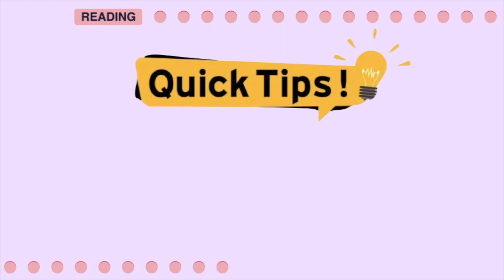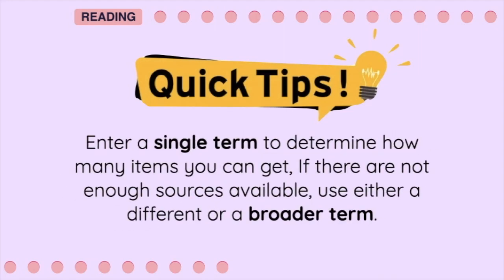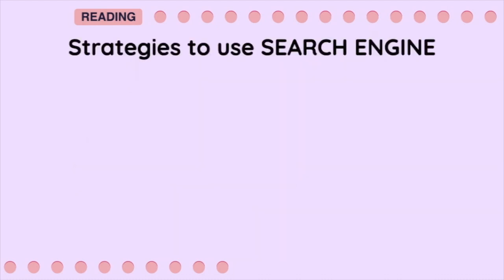Here is a quick tip. When searching for information through search engines, enter a single term to determine how many items you can get. If there are not enough sources available, use either a different or a broader term. However, if there are too many items, here are some strategies you can use.